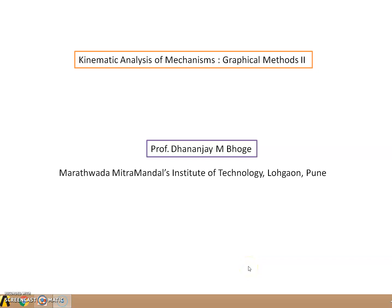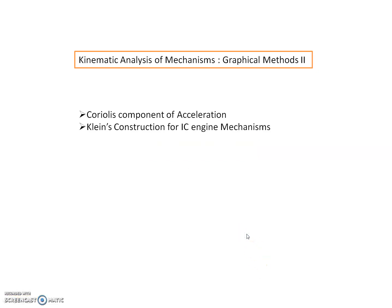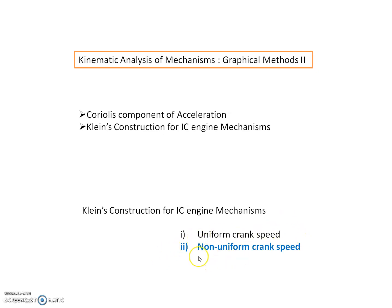Hello everyone, welcome to the lecture series on kinematic analysis of mechanisms - graphical method. Under this, we are studying Coriolis component of acceleration and Klein's construction for IC engine mechanisms. For Klein's construction, there are two possibilities: the crank rotates with uniform speed, and the crank rotates with non-uniform speed. In the previous lecture we saw the procedure for uniform crank speed; today we will see the procedure for non-uniform crank speed.